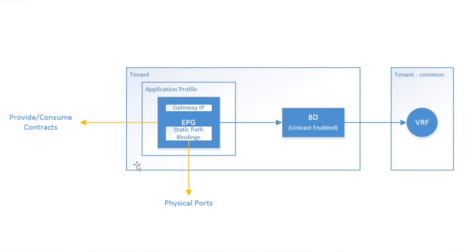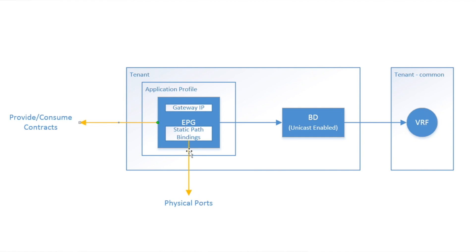Now let's take a look at use case number two. Use case number two is very similar to use case number one except it has some additional items like a layer 3 gateway, and there may be situations where you need contracts. The same model applies — you have a tenant, within a tenant you have an application profile, within that you have an EPG which references a BD. This time, since we are going to be using unicast routing, unicast routing needs to be enabled. The BD needs to reference a VRF, and in this example I'm going to use a private VRF. We will also be using some contracts and static path bindings to extend this VLAN onto multiple physical ports.